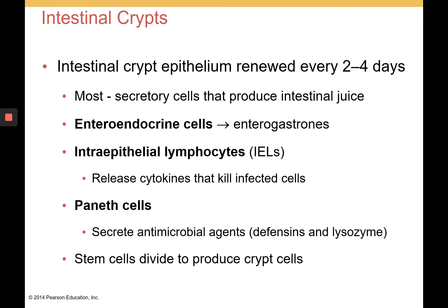There are also intestinal crypts in the small intestine. These contain stem cells that renew the epithelium every two to four days. Most secretory cells that produce intestinal juice are located there. They contain enteroendocrine cells, which produce enterogastrons, as well as intraepithelial lymphocytes that release cytokines to kill infected cells, and Paneth cells, which secrete antimicrobial agents — defensins and lysozymes. Many mucosal immune secretions are produced by these intraepithelial lymphocytes and Paneth cells, while stem cells produce and renew the crypt cells themselves.